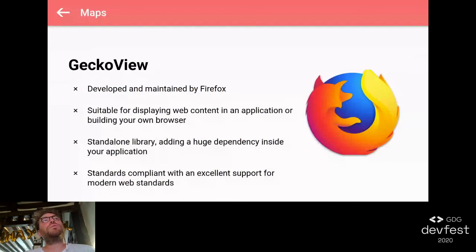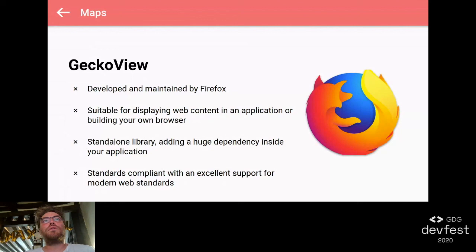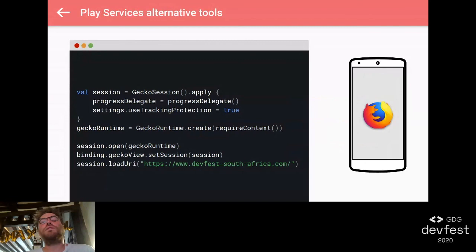For the web view, I really like using the GeckoView, developed and maintained by Firefox. It's very suitable for displaying web content in your application, or if you want to build your own web browser. It's a standalone library - again, it's very large, so be aware you will add a lot of code and dependencies inside your application. Think about ABI splits and ProGuard to optimize. It's a very good and well-maintained project - they are very reactive and provide a lot of updates. It's very simple: just need to set a GeckoSession, inject the GeckoSession into your GeckoView, and then you can load your URL and use it as a web view inside your application.